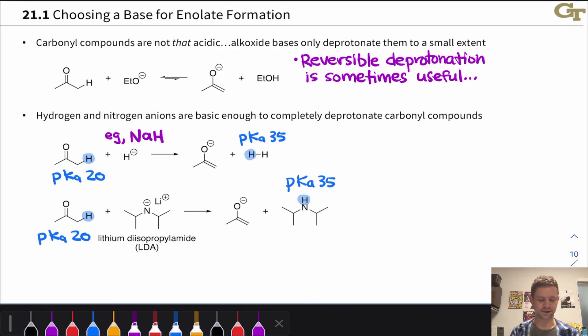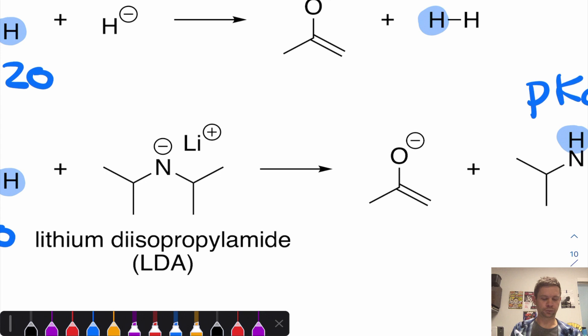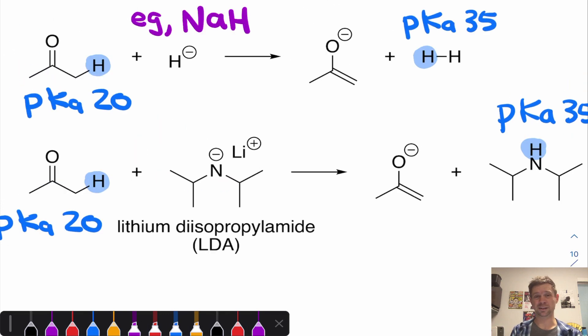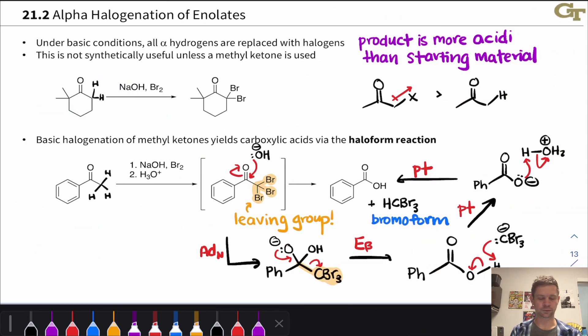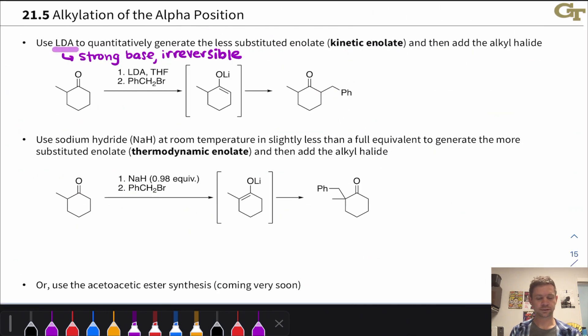One advantage of LDA is that it's actually rather sterically hindered around the basic nitrogen. The two isopropyl groups create a good bit of steric hindrance, steric crowding around the basic nitrogen atom, and this tends to bias that nitrogen to go for the less sterically crowded hydrogen in the ketone substrate. This is one reason it goes for the less substituted position selectively here. And so we get the less substituted enolate in 100% yield because this is an extremely favorable proton transfer process. And then when we treat with the alkyl halide, we'll notice that reaction occurs at the less substituted position selectively. So that enolate just snaps right onto the electrophilic carbon of benzyl bromide, and we get substitution at that less substituted position.